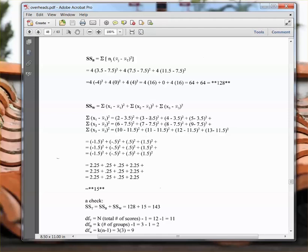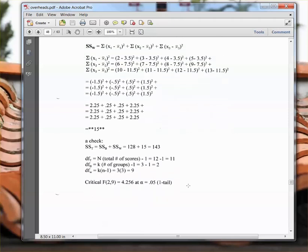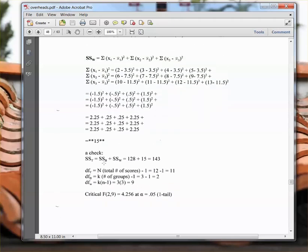The next step is, of course, to reduce the parentheses here, do the subtraction. So we've done that there. Then we're going to square everything. And then we add it all up and you get 15. Now if you've done this properly, your sum of squares between groups and within groups should add up and be the total sum of squares of 143 and it checks out.